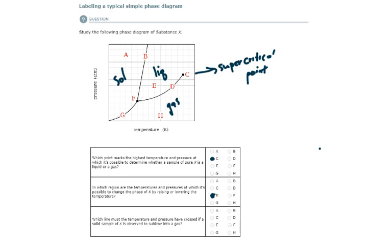The last one here is, which line must the temperature and pressure have crossed if a solid sample of X is observed to sublime? What is sublimation? Sublimation is exactly what dry ice does. Sublimation is going directly from solid to gas. That's sublimation, solid to gas.